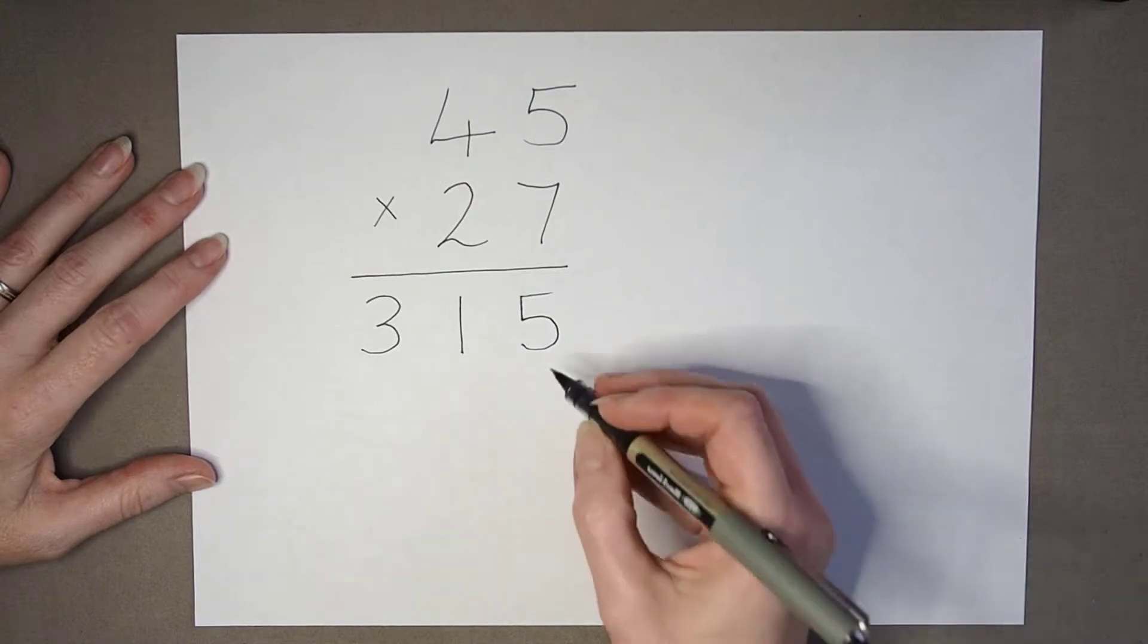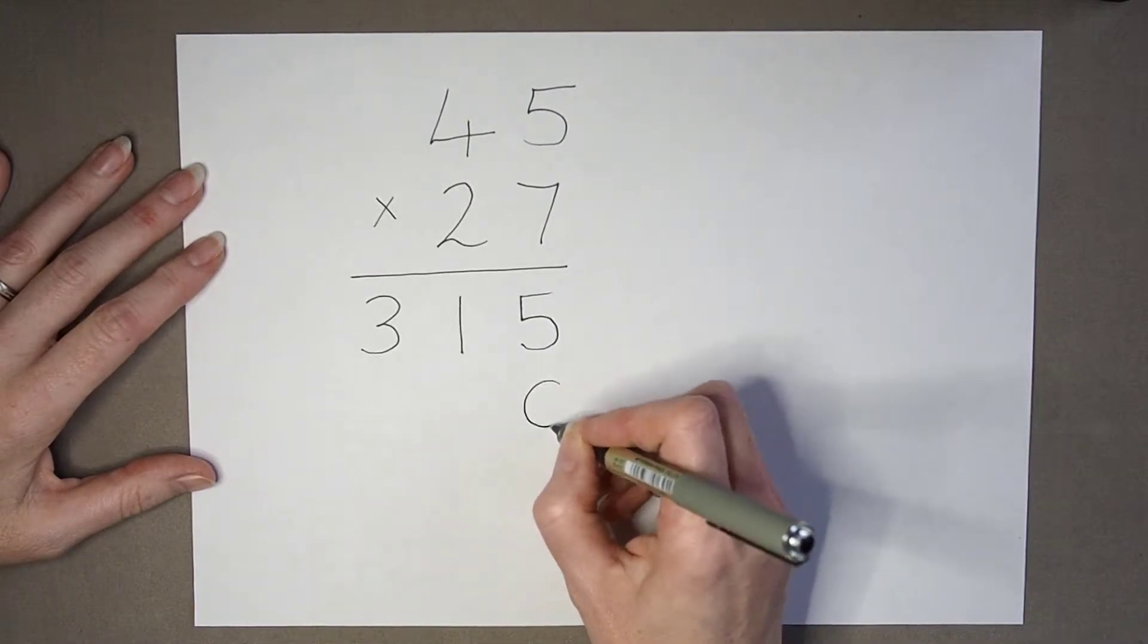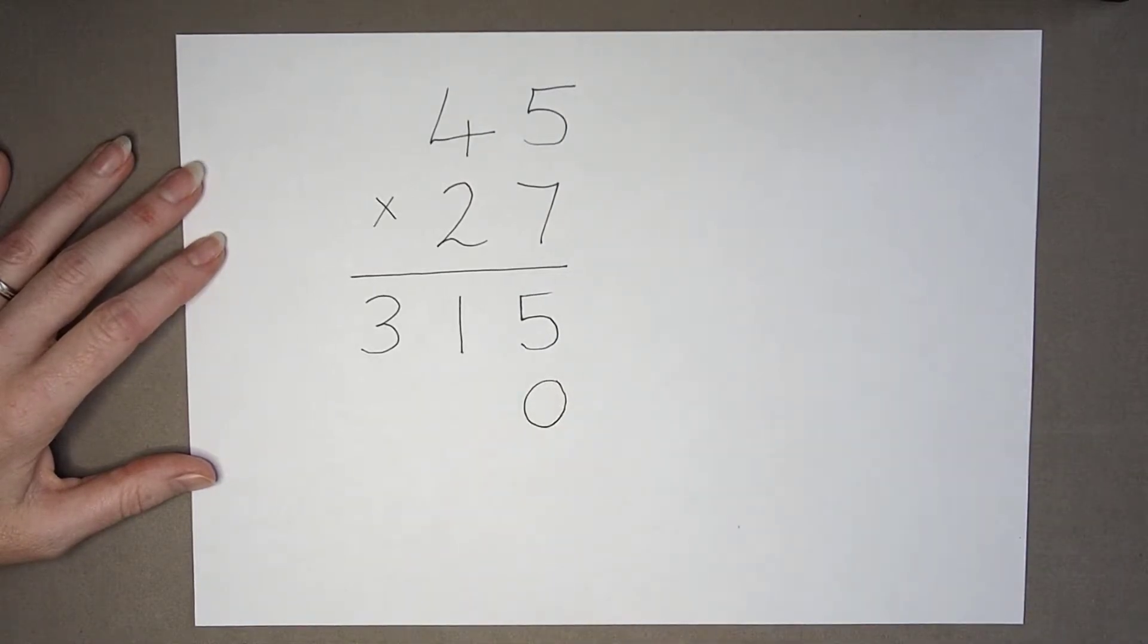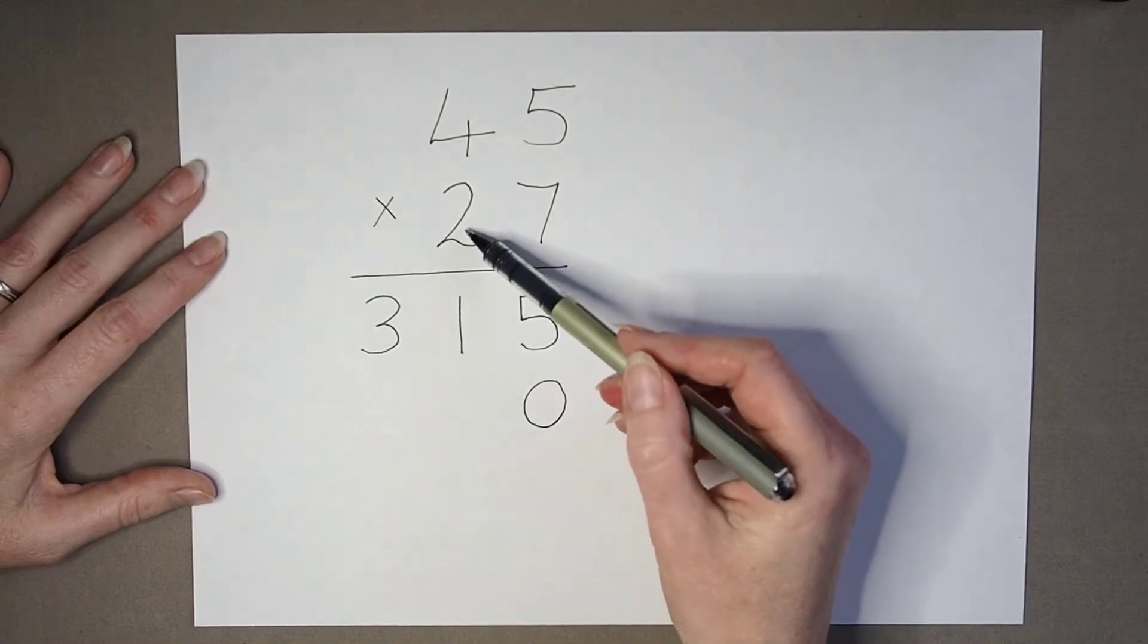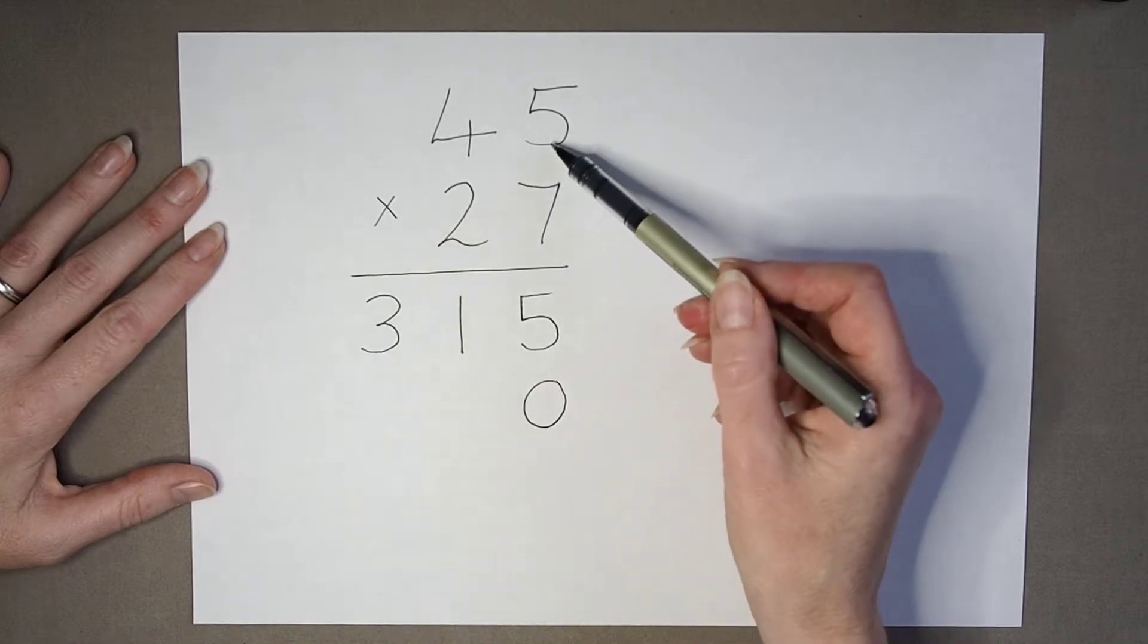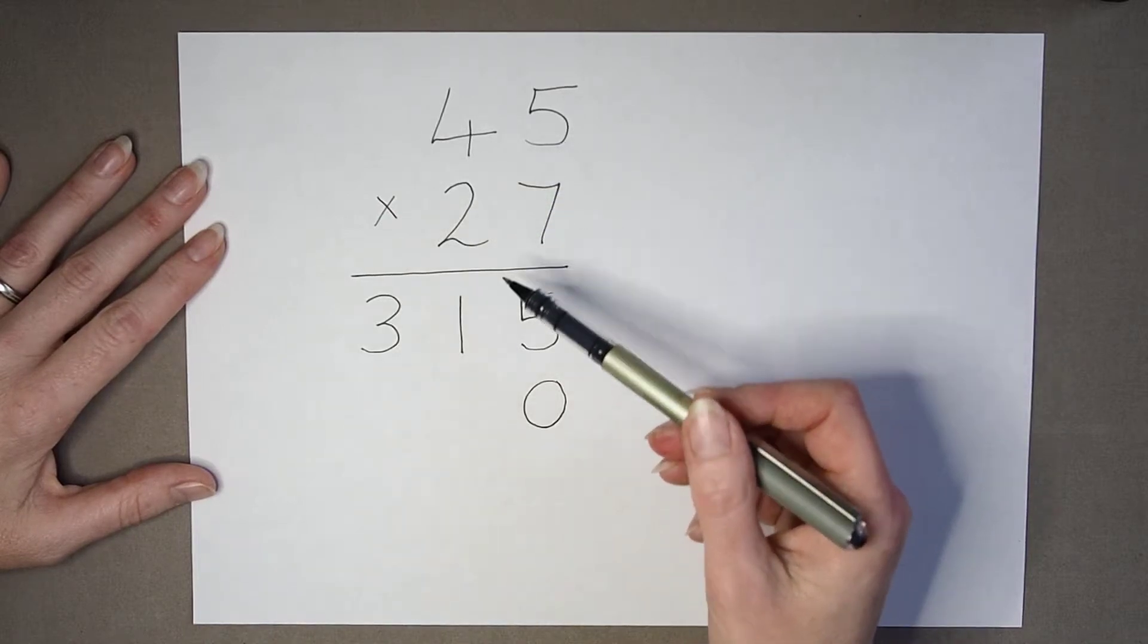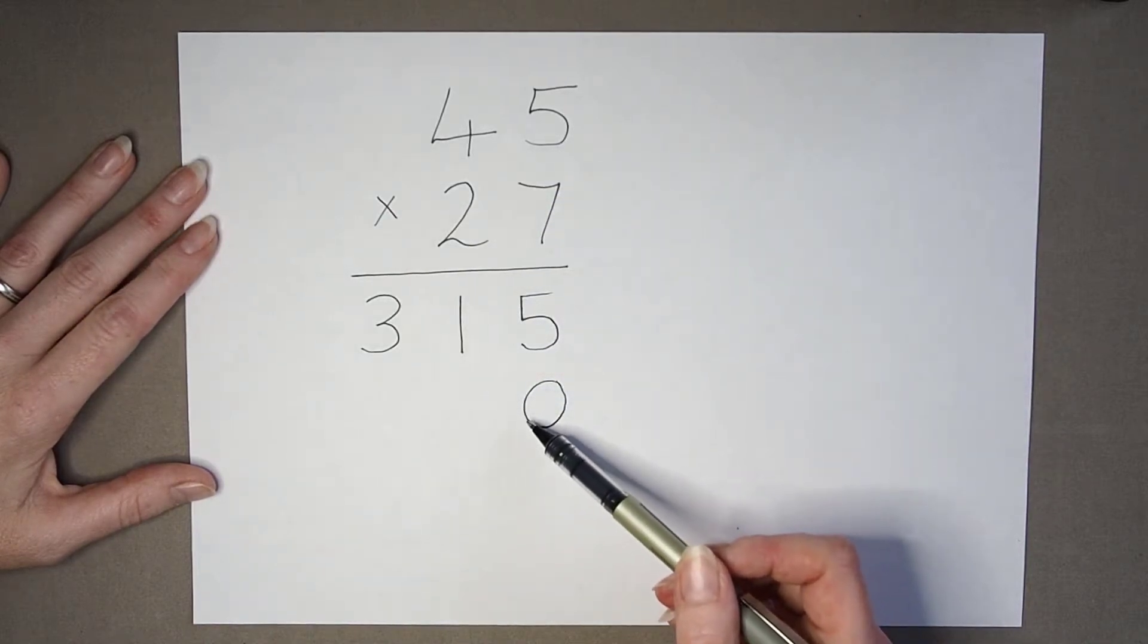Sometimes though, a pupil may actually remember to put the placeholder in, but when working out this calculation and getting 2 multiplied by 5 is 10, seeing the 0,